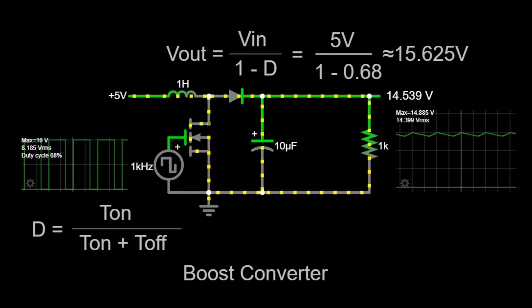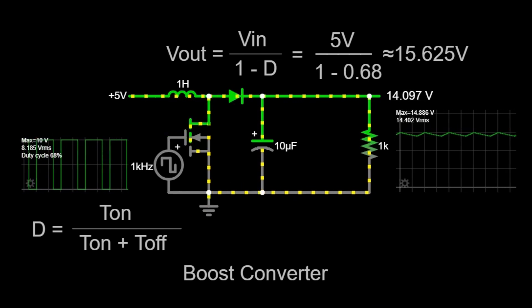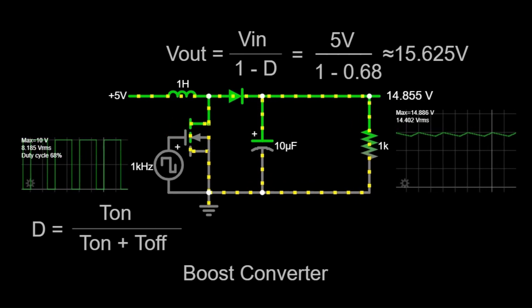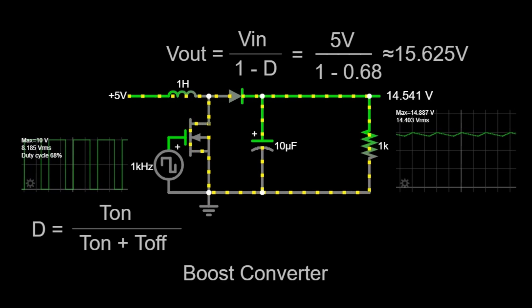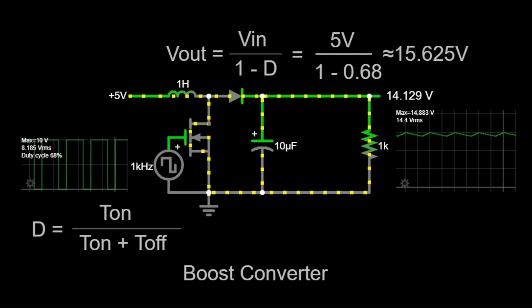The diode in the circuit acts like a one-way valve for electric current. It ensures the current flows in the correct direction and prevents it from flowing backward when the switch is open. This unidirectional flow is essential for maintaining the desired increase in voltage.